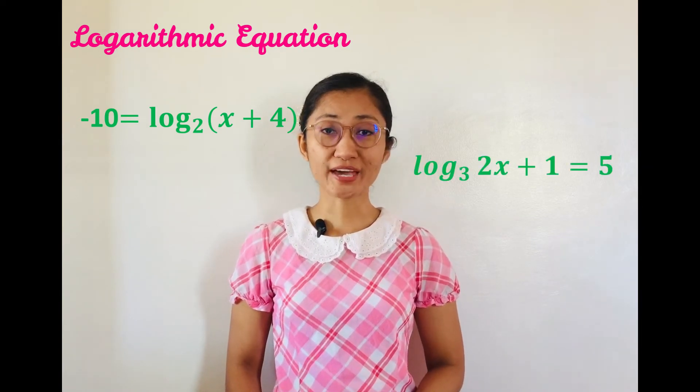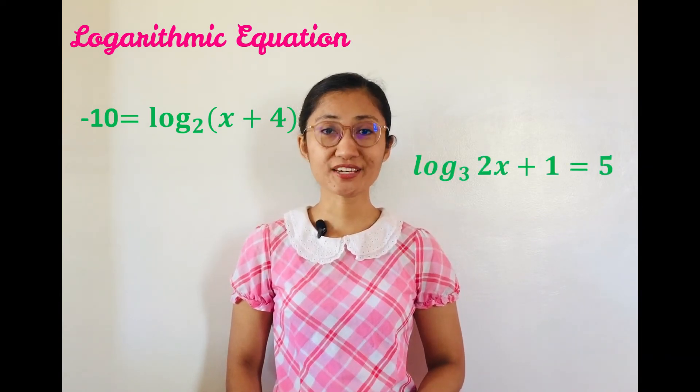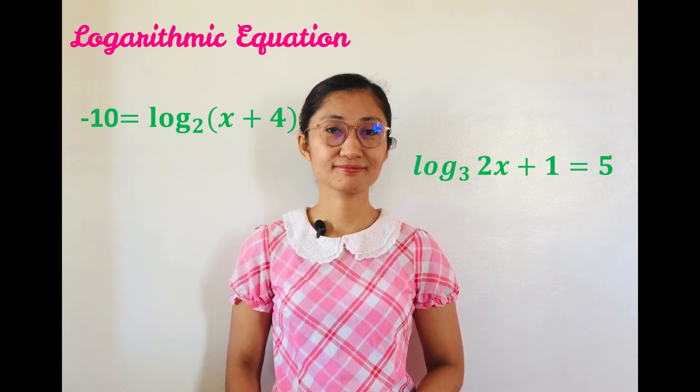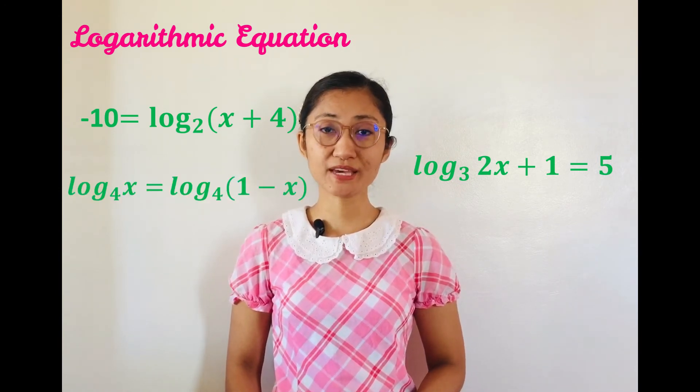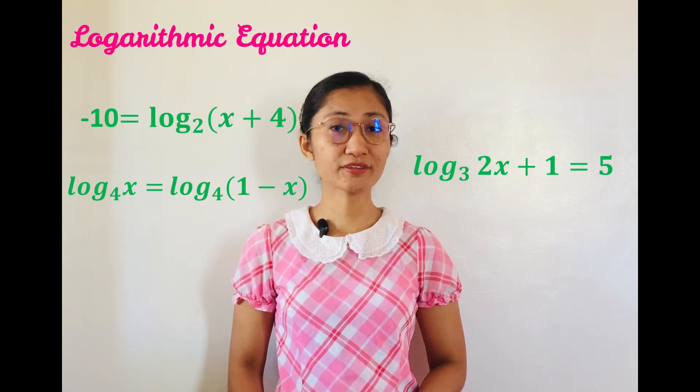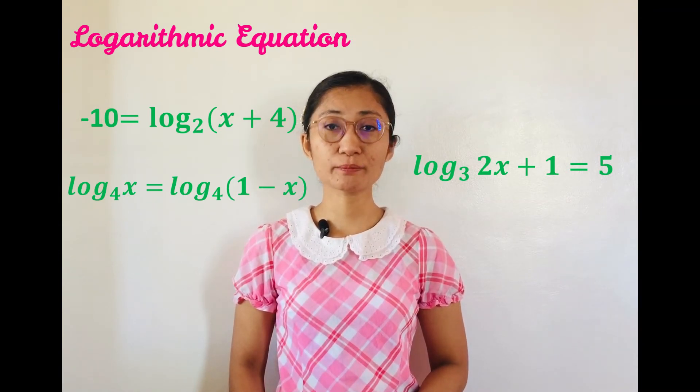Logarithm of 2x plus 1 to the base 3 equals 5. Logarithm of x to the base 4 equals logarithm of 1 minus x to the base 4.